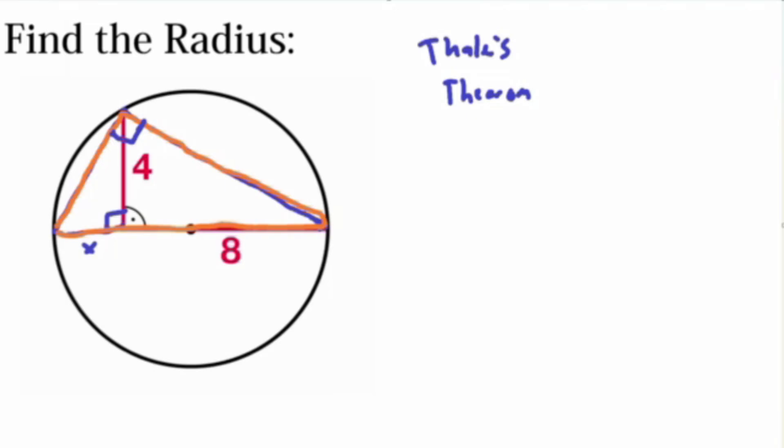And now for this Thales' theorem, if you guys understood the definition correctly, this means that our triangle can look like anything, as long as this one side is the diameter. So if I were to put it here, another point, this would also be a right triangle.